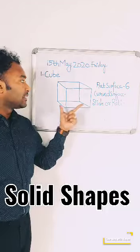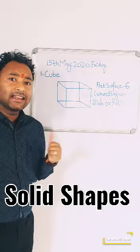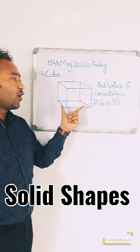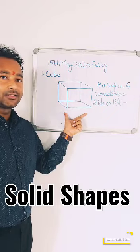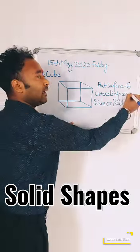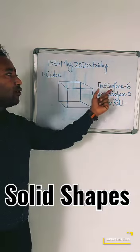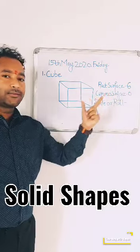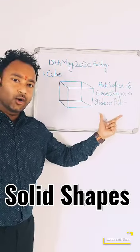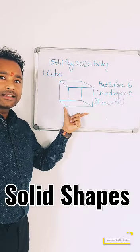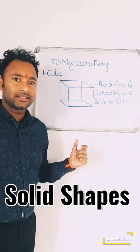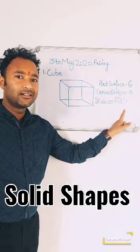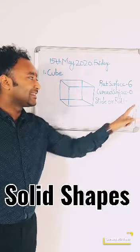Now, curved surfaces — can you see any curved surface in this cube? You cannot see any curved surface in the cube, so the answer is 0. As you know, flat surfaces always slide and curved surfaces always roll. This cube has 6 flat surfaces, so it will slide.